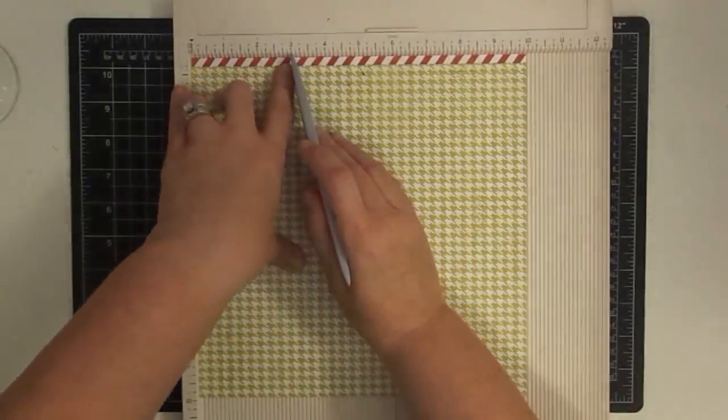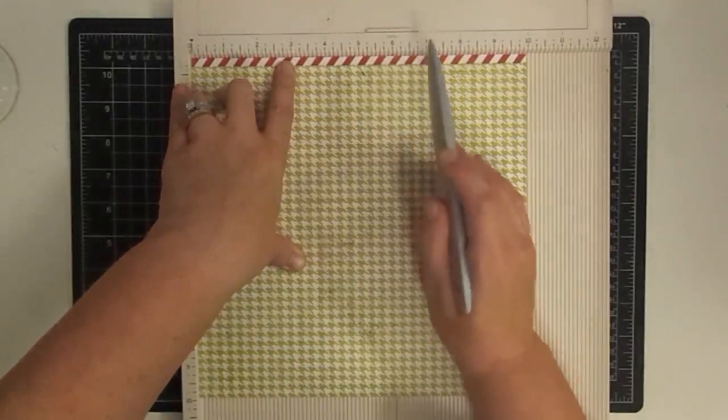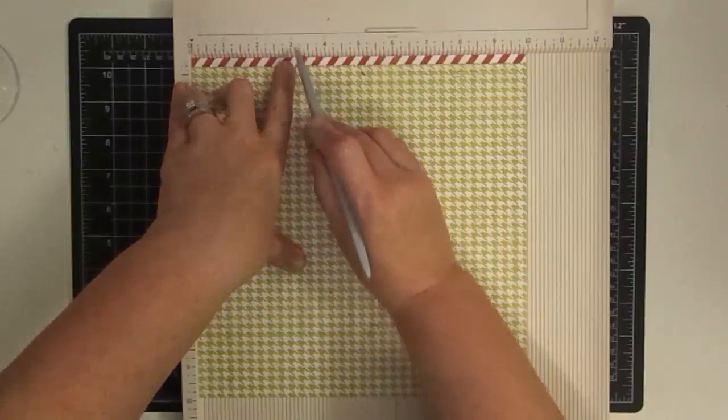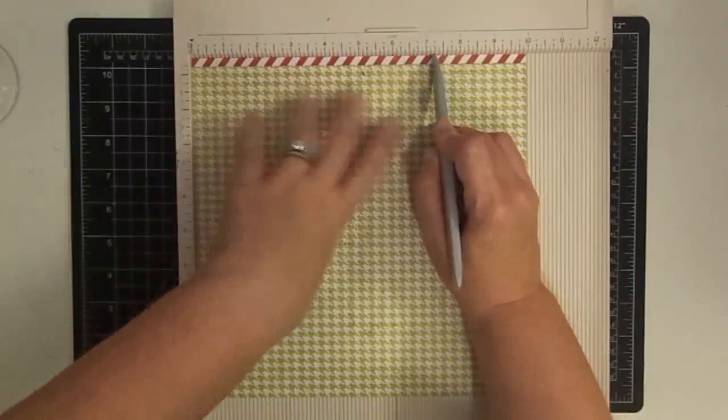Then I'm going to move over from this 3 inch mark, 4 1⁄4 inches. That's going to put me at 7 1⁄4. Why am I doing that? Because that's how wide my envelope is going to be, 4 1⁄4. So we've got 1 inch, 2, 3, 4 1⁄4 makes us 7 1⁄4 inches.